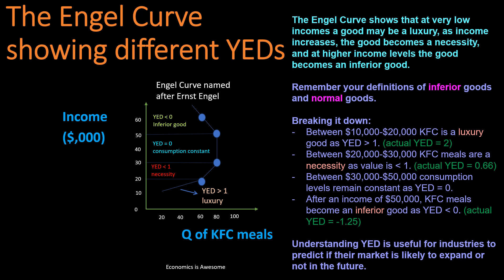Let's say this is the Engel curve for quantity of KFC meals — a bit of a favourite in my household. Income is on the Y-axis and quantity of KFC meals is on the X-axis. The Engel curve shows that at very low incomes a good may be a luxury, but as income increases the good might become a necessity, and at high income levels in this case the good becomes an inferior good.